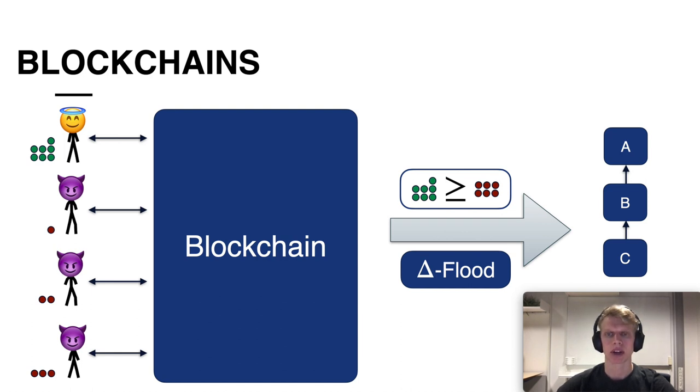Now if we instantiate such a flooding network using the traditional approach then this in fact implies that we need an assumption on the number of honest parties and not only on the resources.